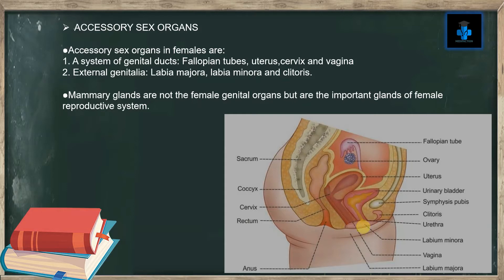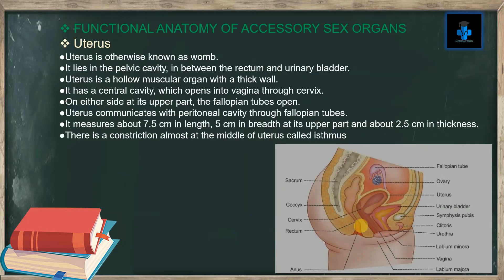The mammary glands are not the female genital organs, but are important glands of the female reproductive system. Now let's learn about the functional anatomy of accessory sex organs. First, let's look at the uterus.